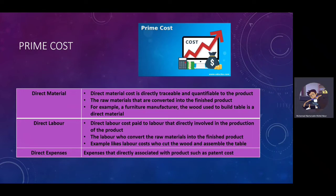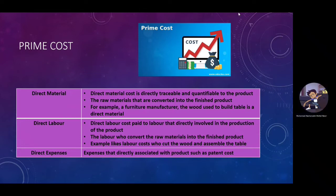For Prime Cost, there are three components: direct material, direct labor, and direct expenses. Direct material cost is directly traceable and quantifiable to the product — for example, the raw materials converted into the finished product, such as the wood used to build a table in a furniture manufacturer. Direct labor costs are paid to labor directly involved in production, such as the labor to cut the wood and assemble the table. Expenses associated with products such as patent costs are also included.